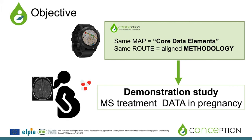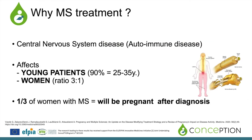To perform this project, we will have the same map, called the Core Data Elements, and the same route, which is an aligned methodology. Using this common map and route, we will perform a demonstration study on data regarding multiple sclerosis treatment in pregnancy. Why multiple sclerosis treatment? Because it is a perfect example for this work. Multiple sclerosis is a central nervous system disease that damages the brain and the spinal cord, affecting young women with the great majority diagnosed before 35 years old, and one third of these diagnosed women will be pregnant.